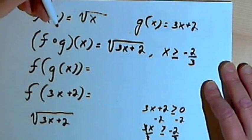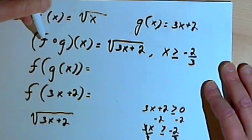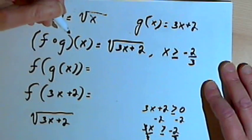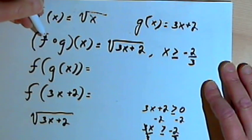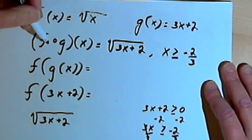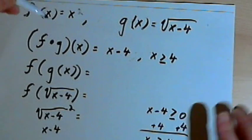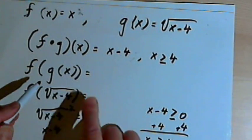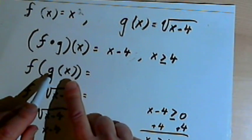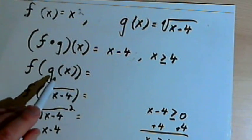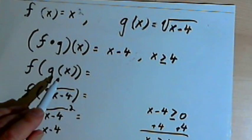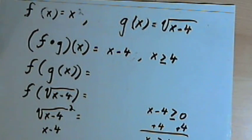When you're doing the domain of the composition of functions, make sure you look for two things. One is what's the domain of the final composition? And as we saw in the other problem, what's the domain of the inside function — the function that we deal with first? In this case it was the g of x function. Okay, so that's about it. Take care, I'll see you next time.